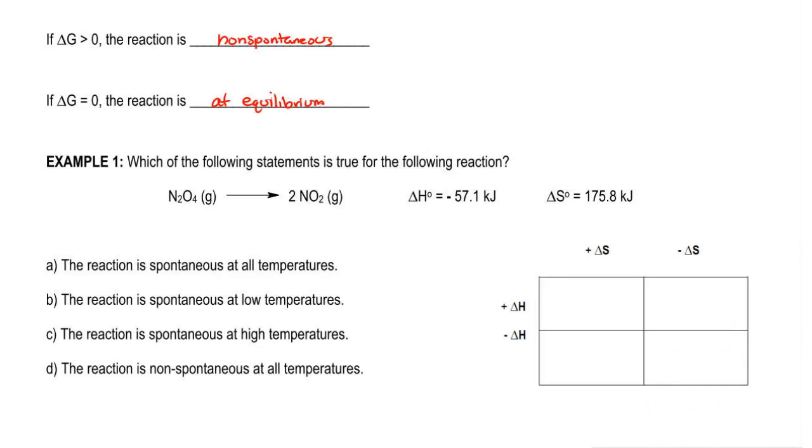The question says, which of the following statements is true for the following reaction? We have N2O4 gas breaks down to give us 2NO2 gas. The delta H value is negative, the delta S value is positive. Then we'll see that our options are the reaction could be spontaneous or non-spontaneous depending on the types of temperatures we're talking about.